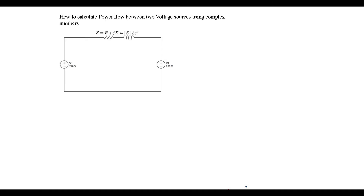In this example, two ideal voltage sources are connected by line impedance of 2 plus 8J ohms. Generator 1 voltage is equal to 240 volts at a phase angle of minus 5 degrees. Generator 2 is equal to 200 volts at a phase angle of 0 degrees. I may refer to these as both generators or voltage sources, but for this example they will mean the same thing.